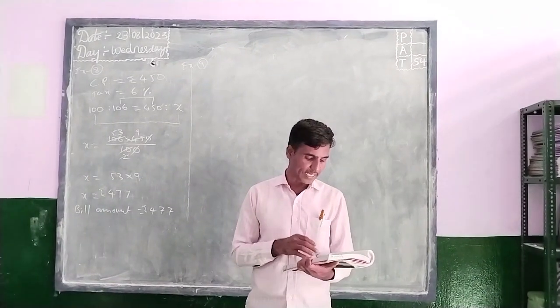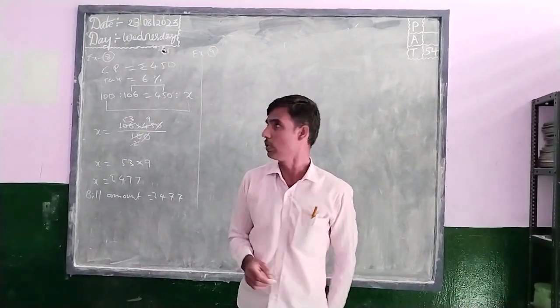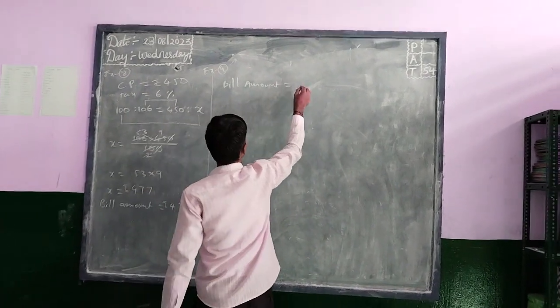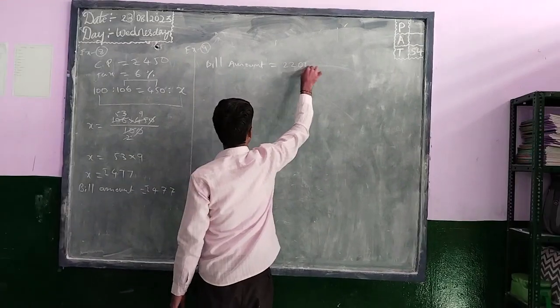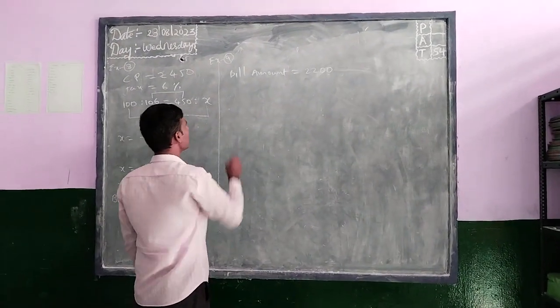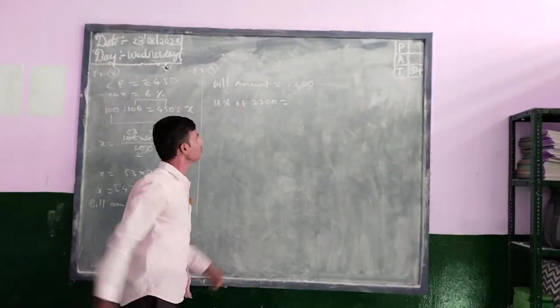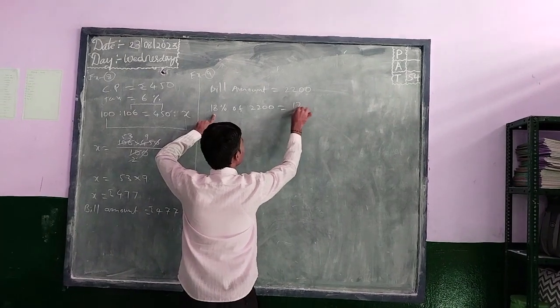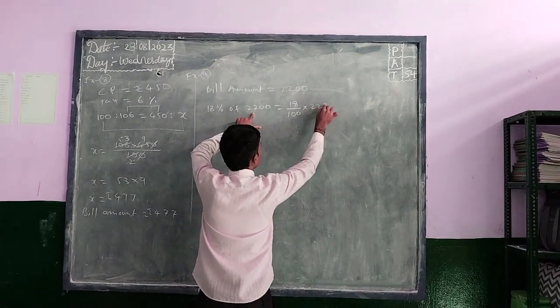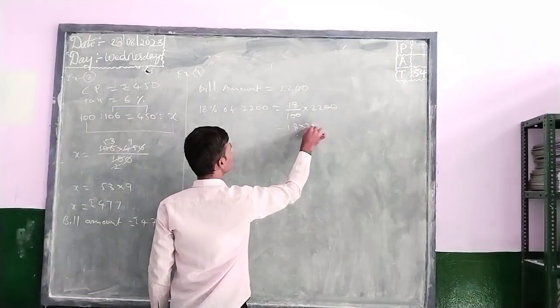In that, 18% GST is also included. Bill amount equals 2200. In that 18% GST. What is 18% GST here? We have to take 18% of 2200. We can take here 18 divided by 100, percentage denominator will get 100, times 2200.